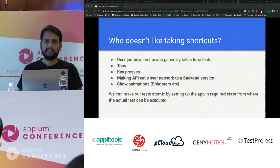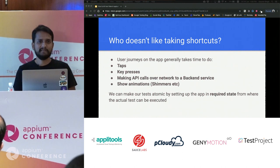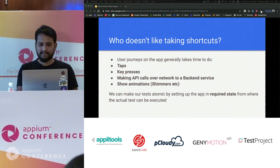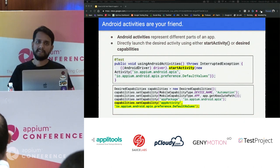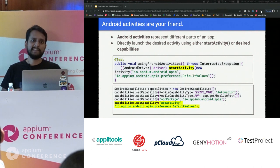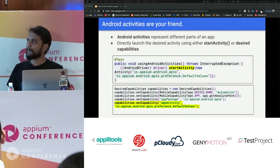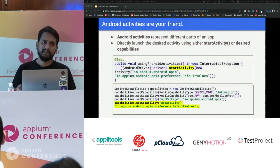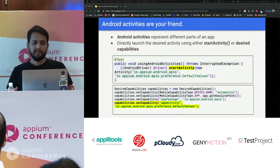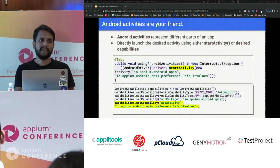Take a simple example: any app has a login flow. If you have 200 Appium scripts all doing login, you're unnecessarily wasting time and login itself might fail. On Android, activities are your friend — any screen is basically an activity. Appium provides a way to trigger activities directly using either the startActivity method on your driver, or via desired capabilities. Using this, you can directly launch your app into the activity you want to test.